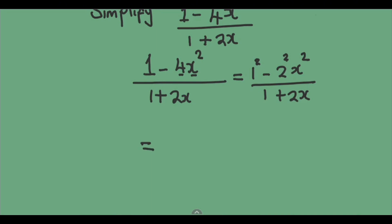So we are going to have something like this: 1 minus 2x in brackets, times 1 plus 2x in brackets over 1 plus 2x. The whole purpose of doing this is to make sure that on the numerator,